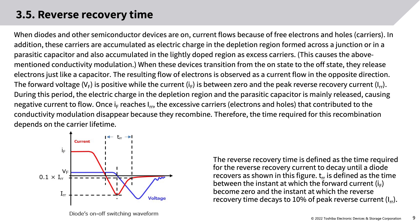Regarding reverse recovery time: when diodes and other semiconductor devices are on, current flows due to free electrons and holes (carriers). These carriers accumulate as electric charge in the depletion region formed across a junction or in a parasitic capacitor, and also accumulate in the lightly doped region as excess carriers, causing conductivity modulation.